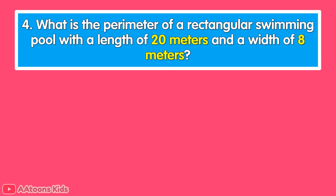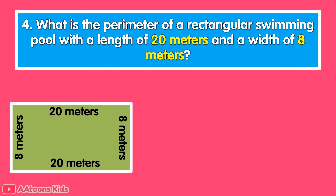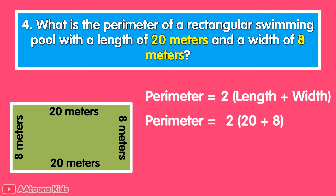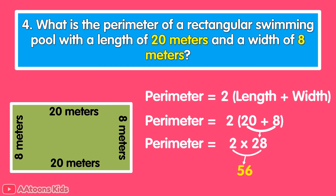What is the perimeter of a rectangular swimming pool with a length of 20 meters and a width of 8 meters? The perimeter is 2 times (length plus width). Length is 20 meters and width is 8 meters. Add 20 plus 8 to get 28, then multiply 28 by 2 to get 56. So the perimeter of the rectangular swimming pool is 56 meters.